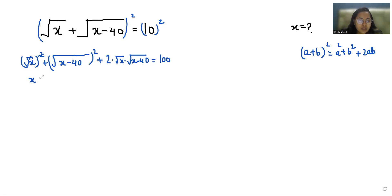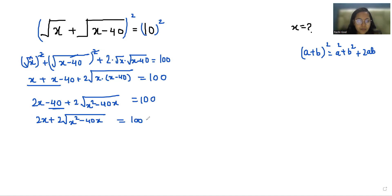So x plus, similarly in this case, x minus 40 plus 2 times in single under root x times x minus 40 equals 100. So x plus x is 2x minus 40 plus 2 under root x times x is x square minus 40x, which we can write as x square minus 40x.